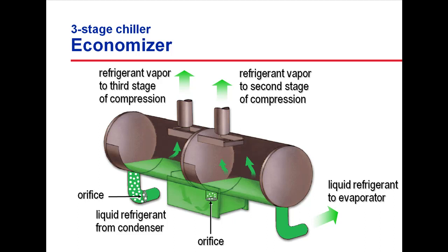The second expansion device further reduces the pressure of the refrigerant to that of the second stage impeller inlet. This pressure drop causes a portion of the liquid refrigerant to flash, and the resulting mixture of liquid and vapor enters the low-pressure chamber of the economizer.